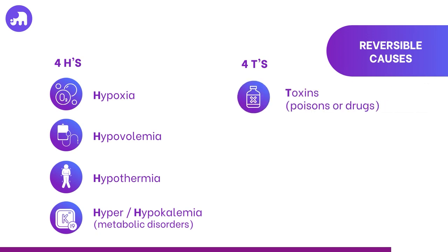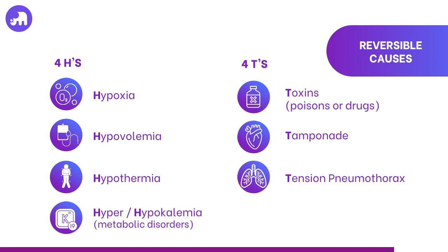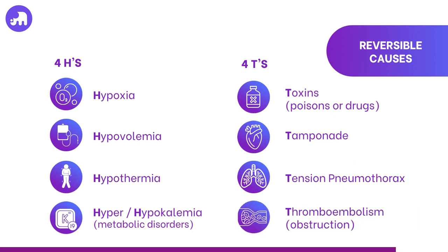Moving on to the 4Ts: toxins — overdoses such as from opioids, benzodiazepines and other toxic ingestions or exposures can lead to an arrest. Cardiac tamponade refers to fluid accumulation in the pericardial space which can compress the heart and impede its function. Tension pneumothorax is a build-up of air in the pleural space, usually due to trauma or a ruptured lung, which can put pressure on the heart and lungs, compromising blood flow and ventilation. And finally, thrombosis, which can refer to pathologies such as a pulmonary embolism in the lungs or a blood clot in the coronary arteries causing an MI.